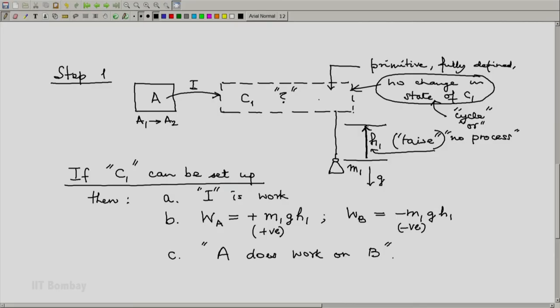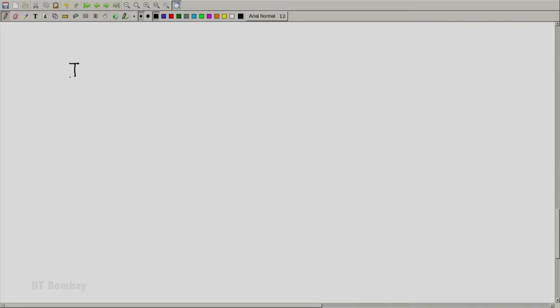But it is possible that we are not able to set up this required system C1. And the conclusion is possible only if we can set up C1. It is possible that C1 cannot be set up. The next step is if C1 cannot be set up as specified, then we go to step 2.